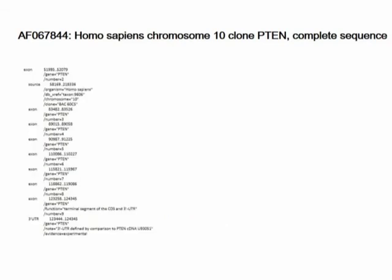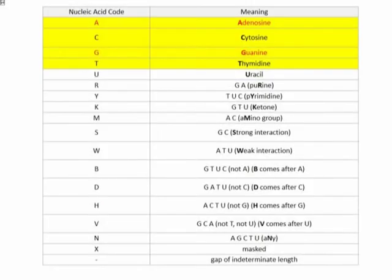By convention, a DNA sequence is written left to right from 5' to 3' end - this is the forward direction. 3' to 5' is the reverse strand, but this is just a convention. For the DNA sequence database entry or flat file, sequences are written by convention from the 5' to 3' end.